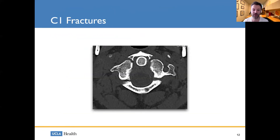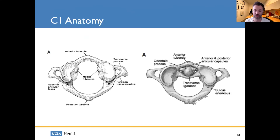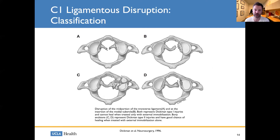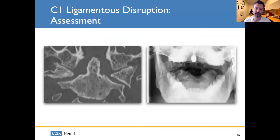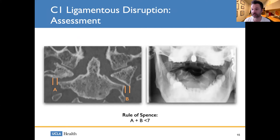Another important fracture is C1 fractures. The most important anatomical element is the transverse ligament, which keeps C1 from sliding forward on C2 — it hugs the dens and goes from one lateral mass to the other. In classification systems, a true ligamentous injury will require surgical intervention, whereas combined ligamentous and bony injury may heal with rigid immobilization such as a halo. The rule of spence states that lateral overhang of both lateral masses greater than seven millimeters is concerning for rupture of the transverse ligament in the setting of a C1 fracture.